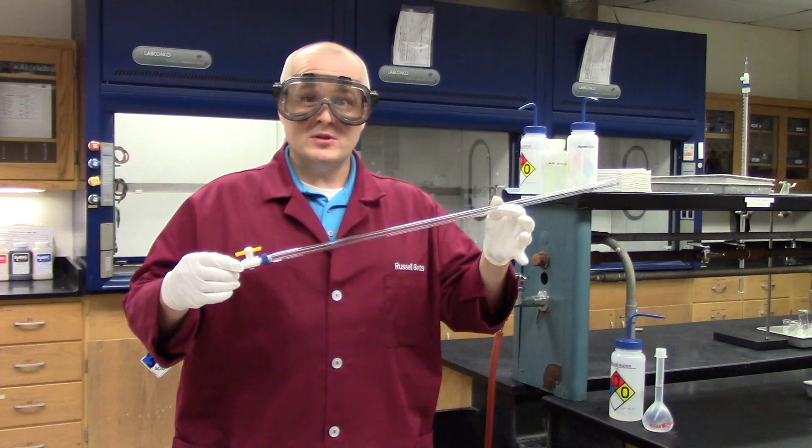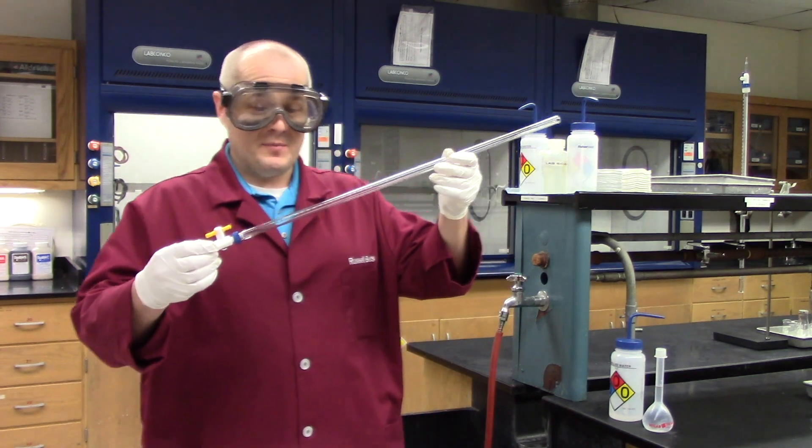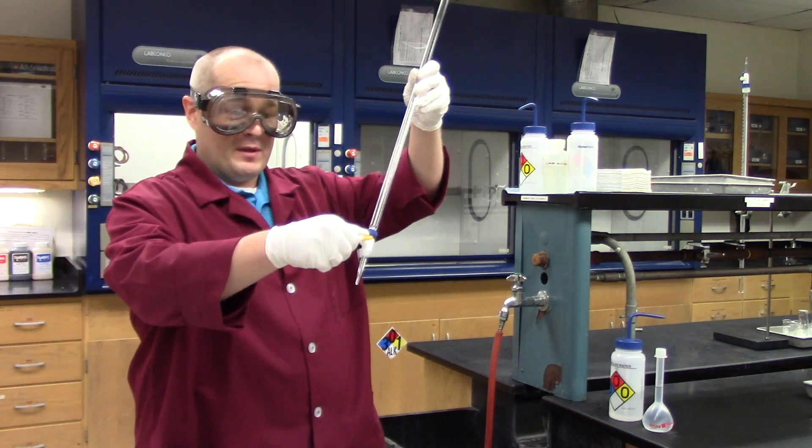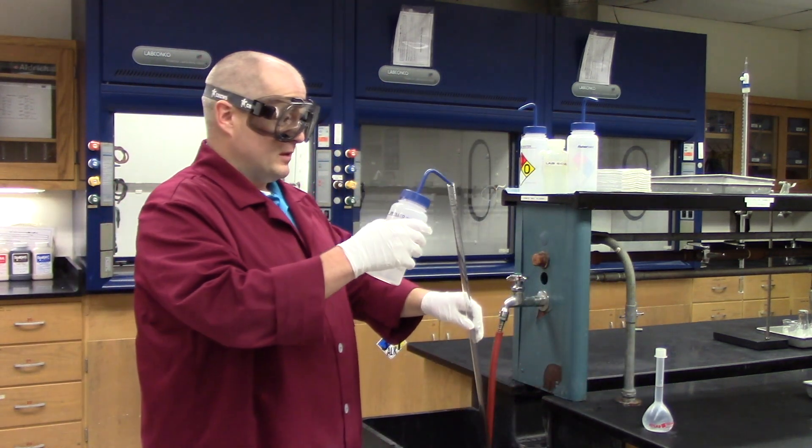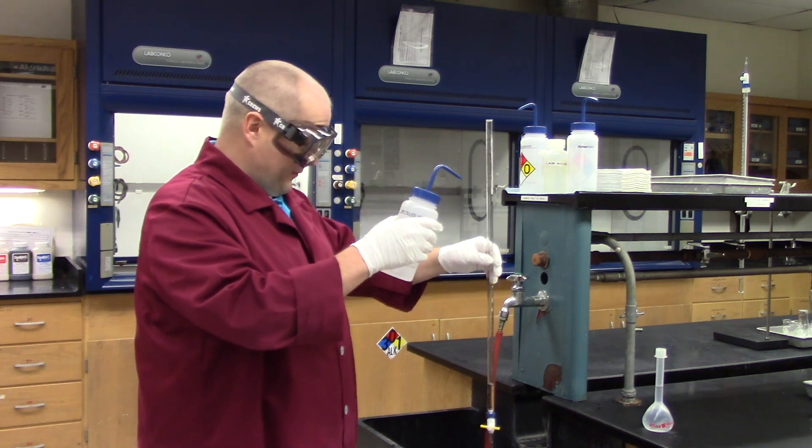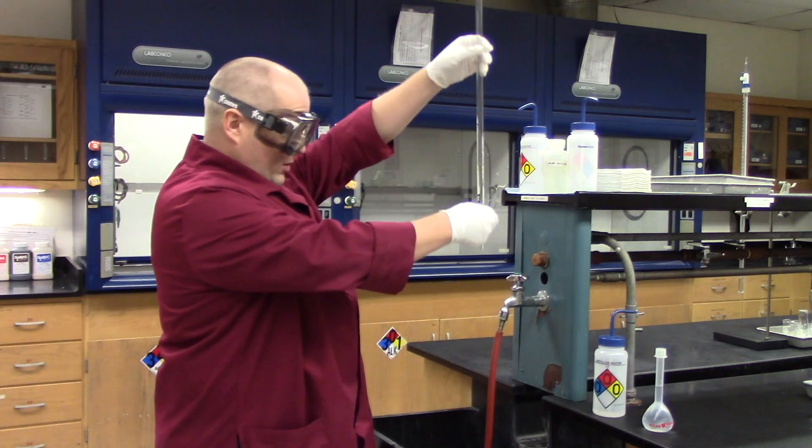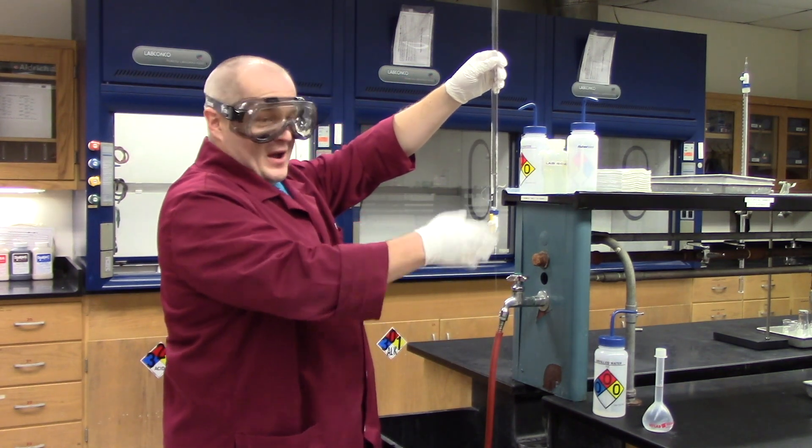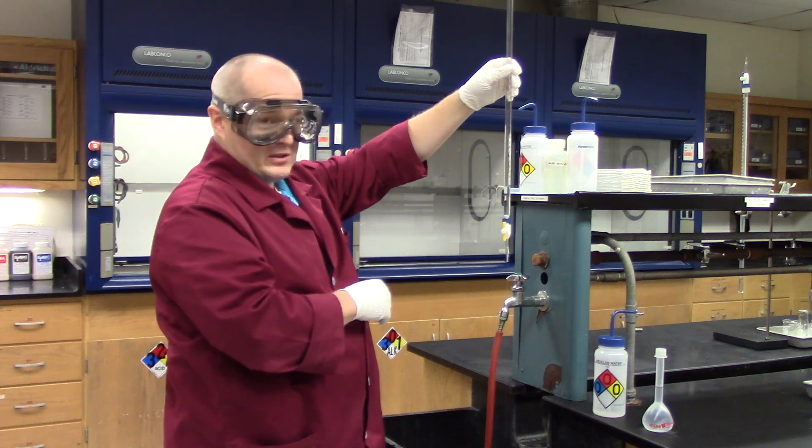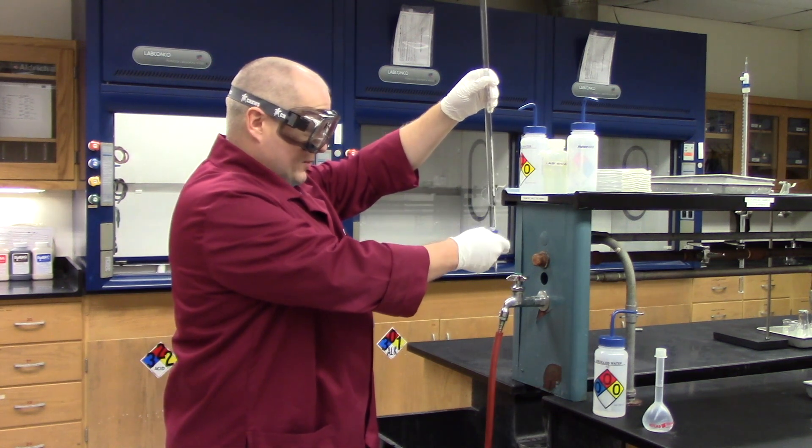Now we will show you how to rinse the burette and put your antacid solution inside of it. To rinse the burette, simply take the stopcock and put it in the closed position. Take a squirt water bottle, squirt a little bit of water in there, between five and ten mLs. Open the stopcock and let a little bit of water run out of the bottom. You are trying to rinse out any impurities or dust or whatever that may have gotten into your burette. Once you have let a few mLs run out, close it back up.